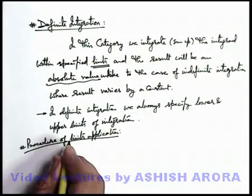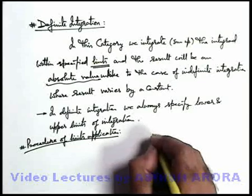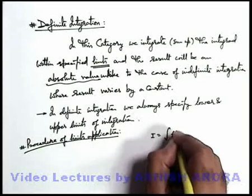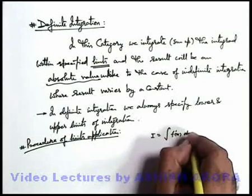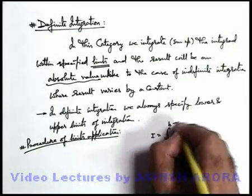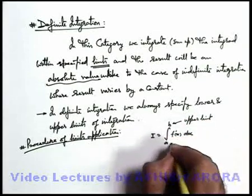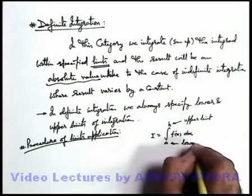If we talk about the procedure of limits application, we can see if we are given with an integrand I is integration of f prime x dx, and we apply limits from a to b. Here this b is the upper limit and a is the lower limit.